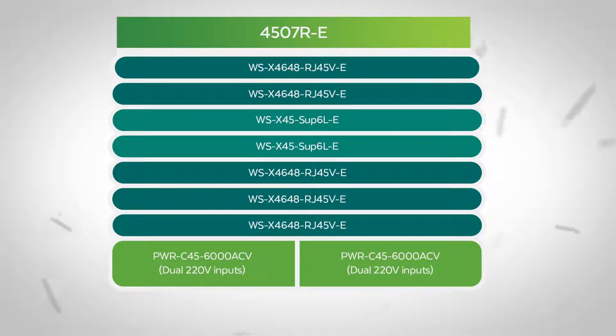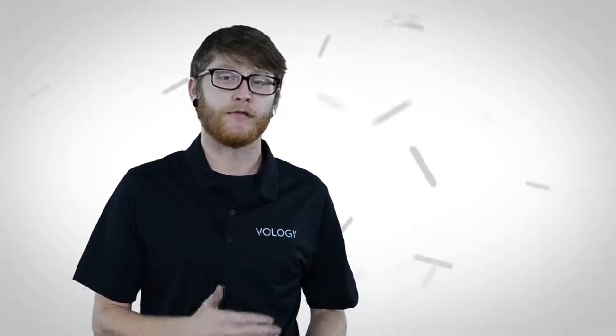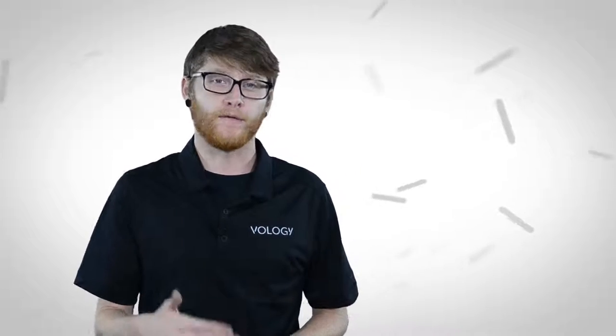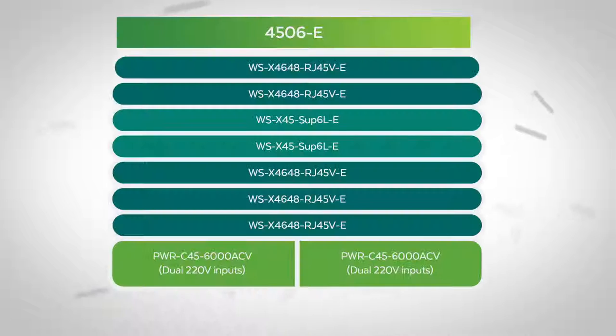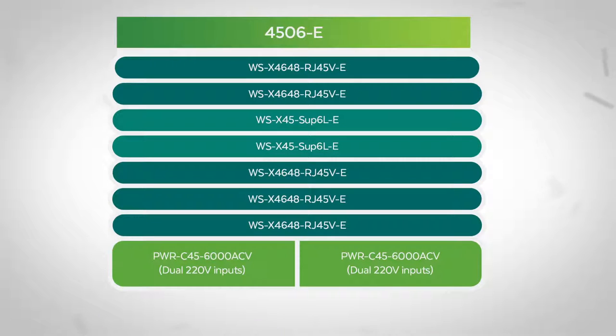This chassis-based solution is simple and provides the highest availability for the wiring closet today. For scenarios where a redundant supervisor is not required, moving to a single supervisor and a 4506-E or a 4503-E chassis can offer quite a bit of savings. Where this configuration lacks the supervisor redundancy of the 4507R solution, it does integrate the line cards, allowing them to be managed as a single unit.